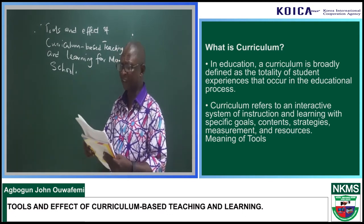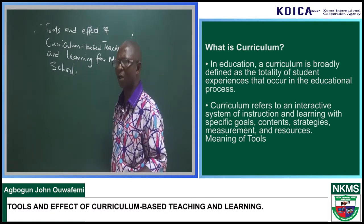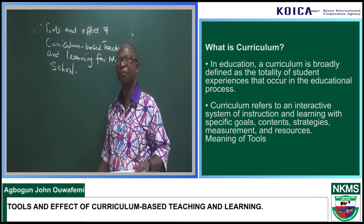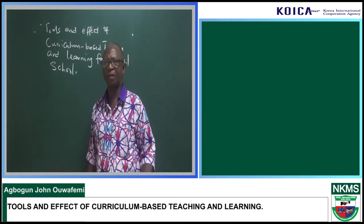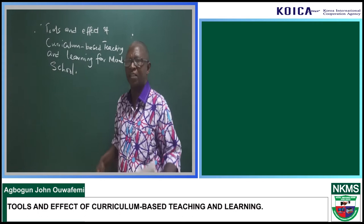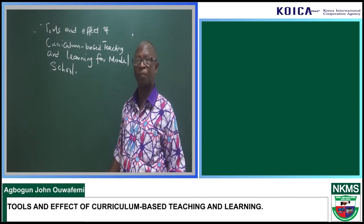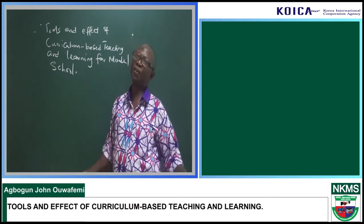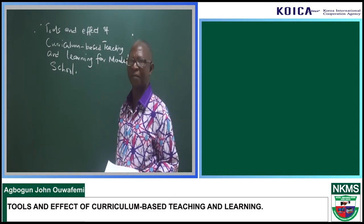This topic says tools and effects of curriculum-based teaching and learning for modern school. If I want to define modern school, I can say a modern school is a unique school — that is, when a school is unique, things of uniqueness will be expected from such a school, things not expected from an ordinary school. Take for example, Nagira Korea Mode school — it is one of the best.